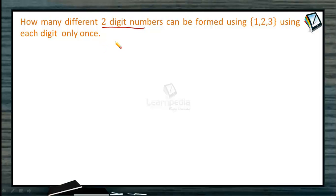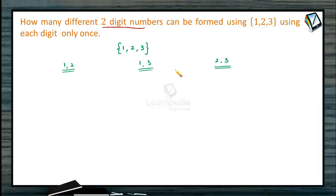From the set {1, 2, 3}, we need to form two-digit numbers. The two digits chosen can be 1 & 2, or 1 & 3, or 2 & 3. When 1 and 2 are used, we can form 12 (units place = 2, tens place = 1) or 21 (units place = 1, tens place = 2) — two different two-digit numbers.